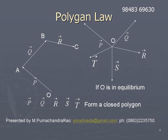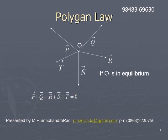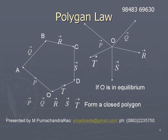The vector R bar is represented in magnitude and direction by BC, so BC is proportional to R bar and its direction is the direction of R bar. CD represents S bar and DO represents T bar. When we represent the vectors this way, we get a closed polygon. So whenever several vectors act at a point such that their resultant is 0, they can be represented by the sides of a polygon taken in order.